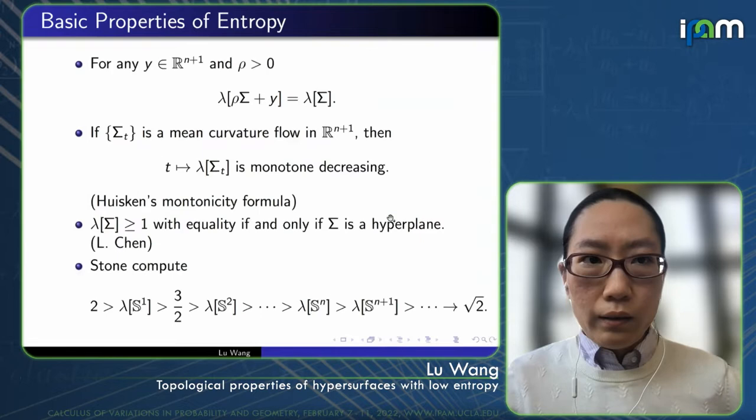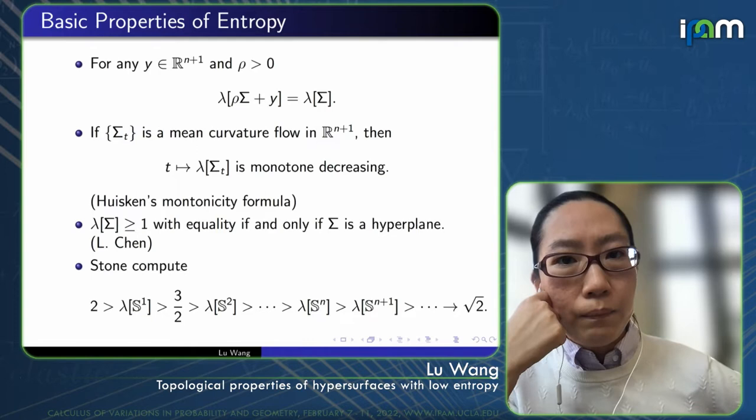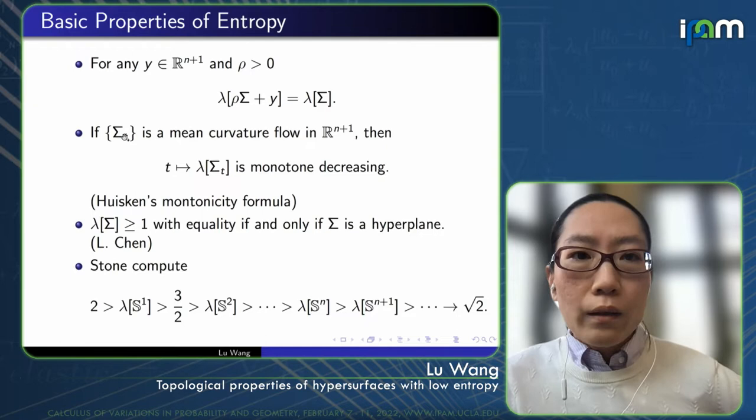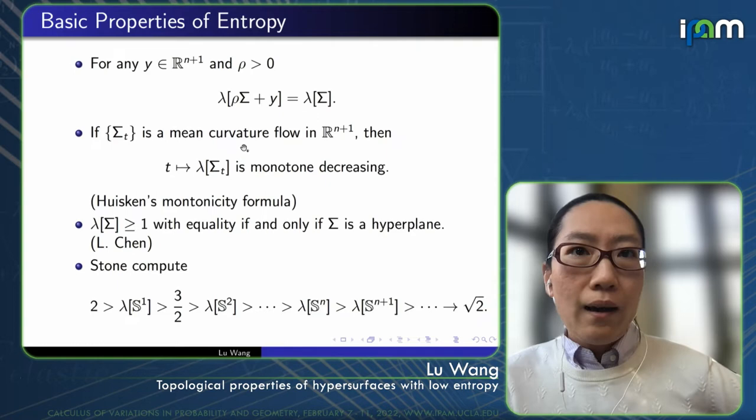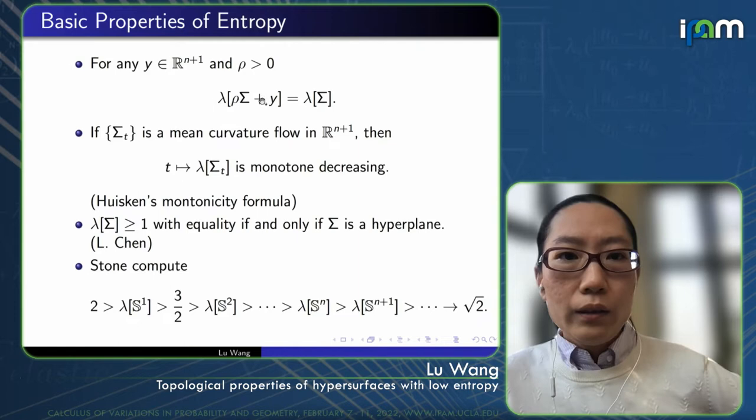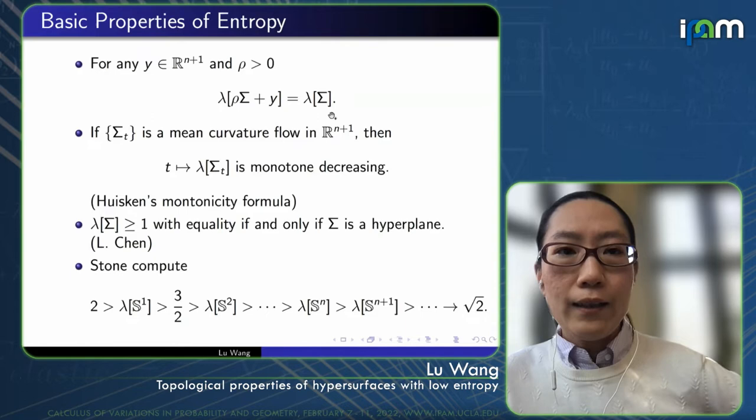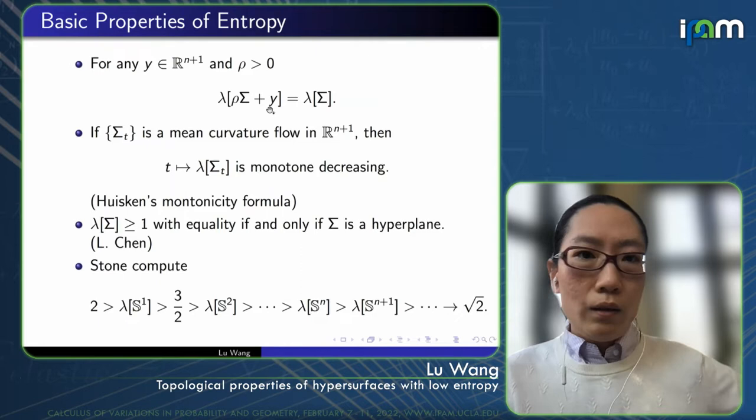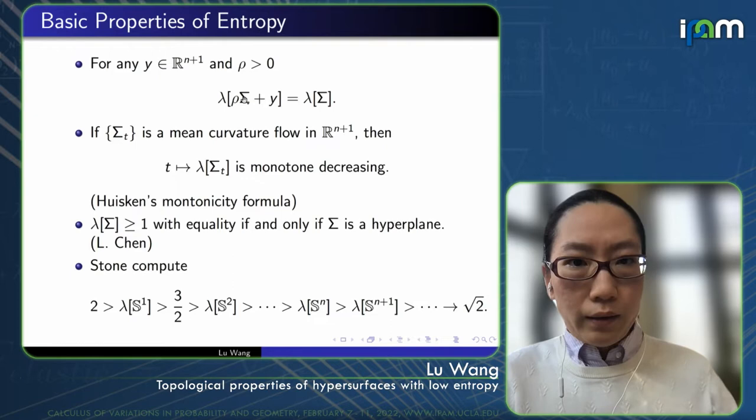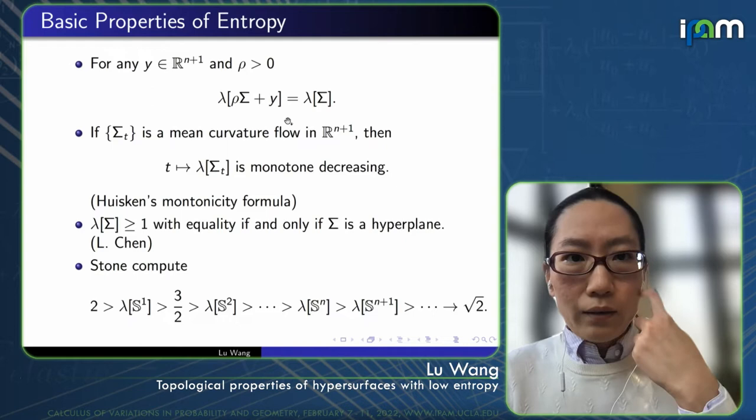Next, I would like to discuss some basic properties of entropy, in particular, in connection with mean curvature flow. First, let's observe that because the definition involves this supremum sign, this makes the entropy translation and dilation invariant. This ρΣ + y means that you first rescale your hypersurface by factor ρ, and then translate by y. This entropy is a geometric invariant under translation and dilation.